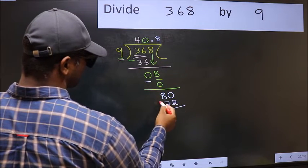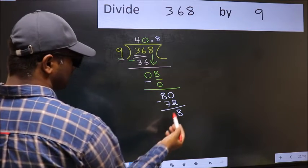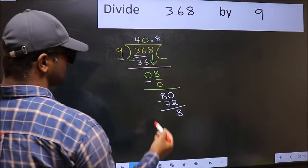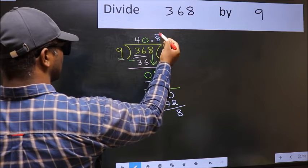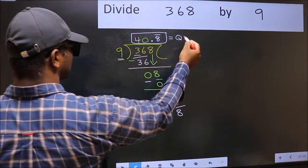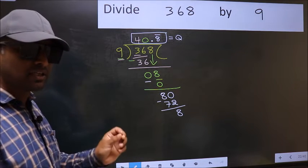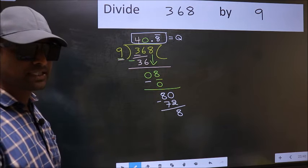Now, you should subtract. We get 8. We got 8 again. That means, we get bar on this number. So this is our quotient. Did you understand where the mistake happens? You should not do that mistake.